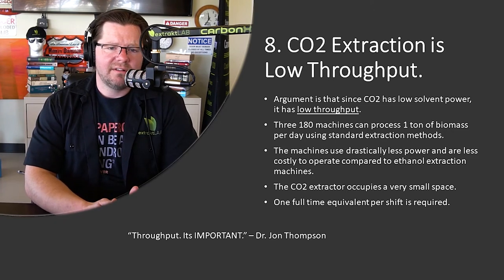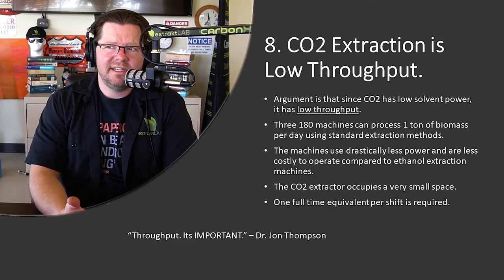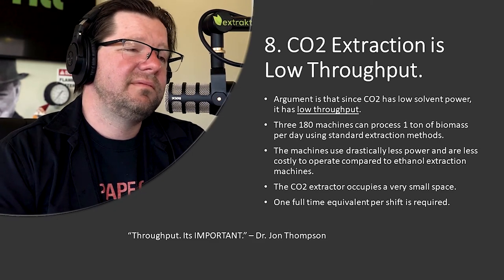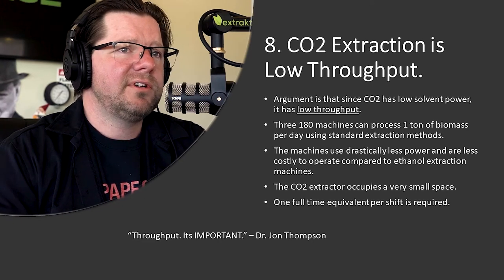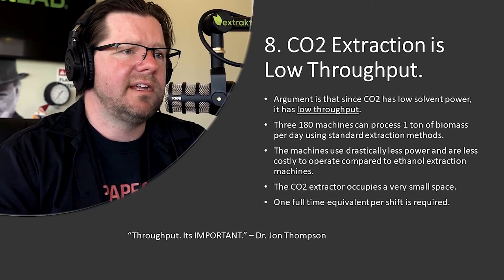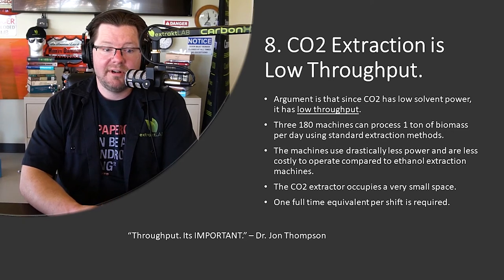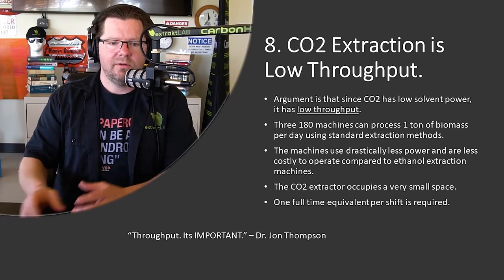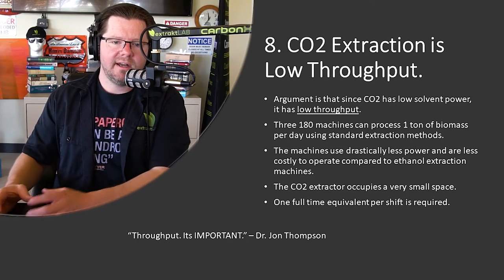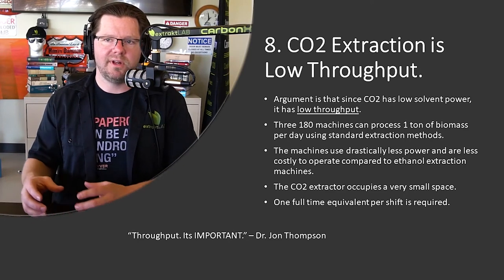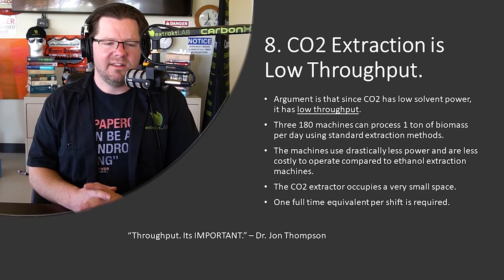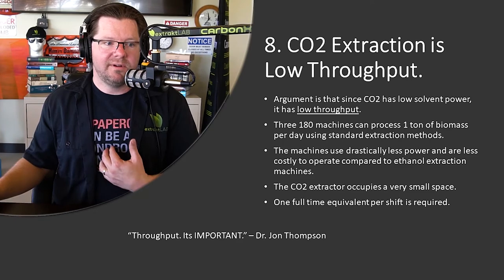We're running a five-ton-a-day facility in less than 4,000 square feet — that's our extraction area. We're running at higher pressure and higher temperature. Nobody in the hemp or cannabis industry would say five tons a day is low throughput. Throughput is important, but throughput per unit cost, per unit operating cost, or per unit facility cost — that context is actually much more important.